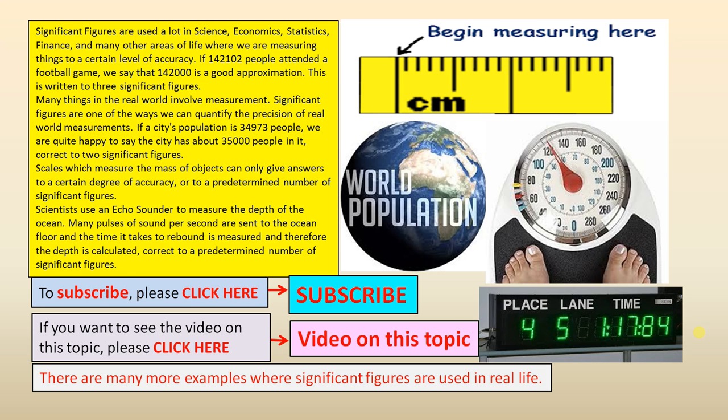Many things in the real world involve measurement. Significant figures are one of the ways we quantify the precision of real world measurements. If a city's population is 34,973 people, we are quite happy to say that the city has about 35,000 people in it, correct to two significant figures.